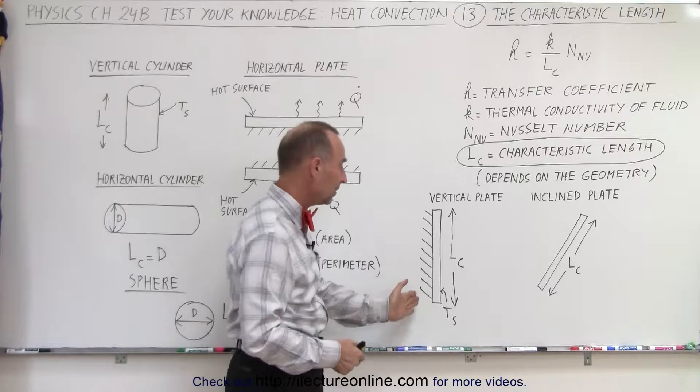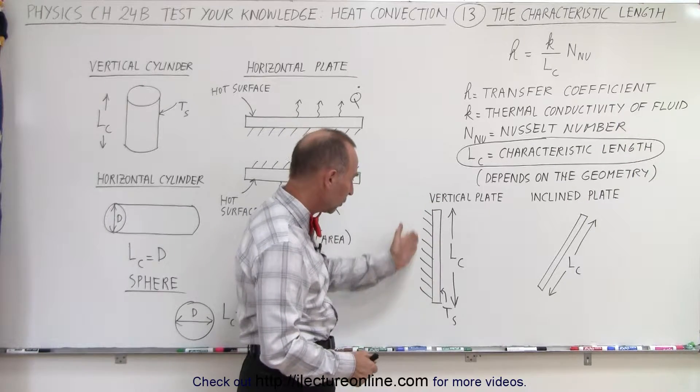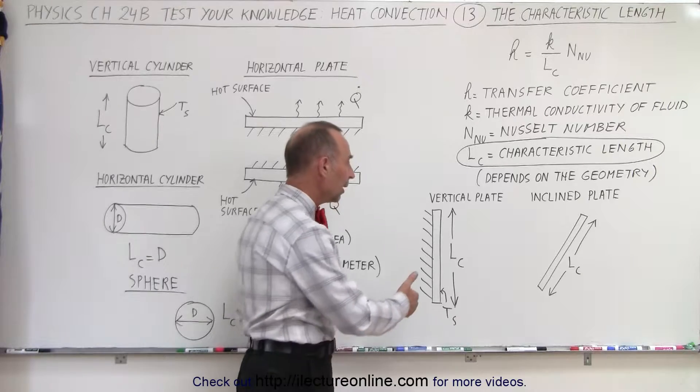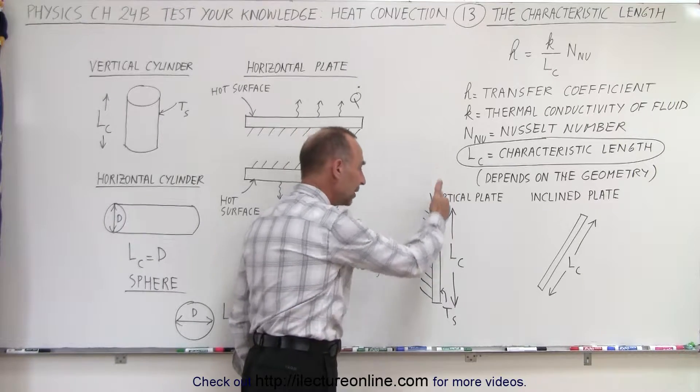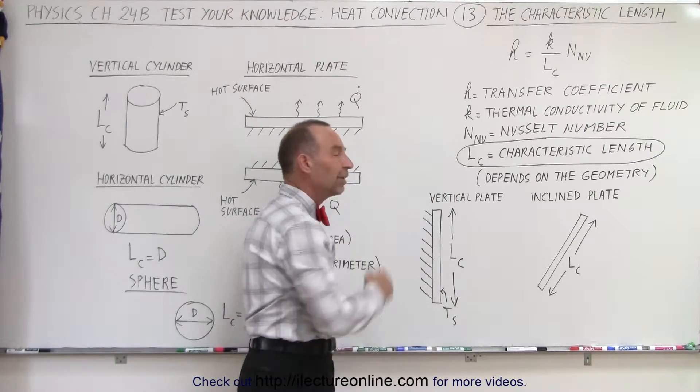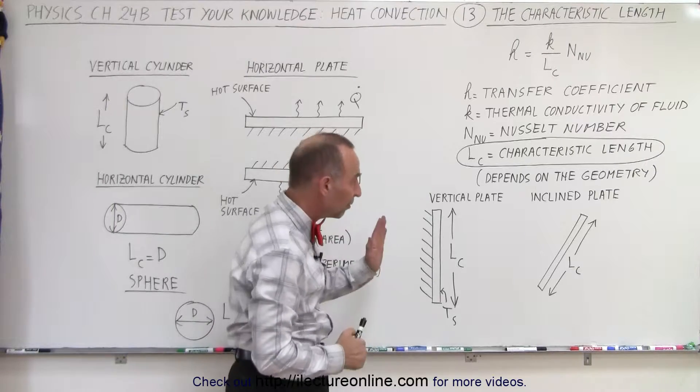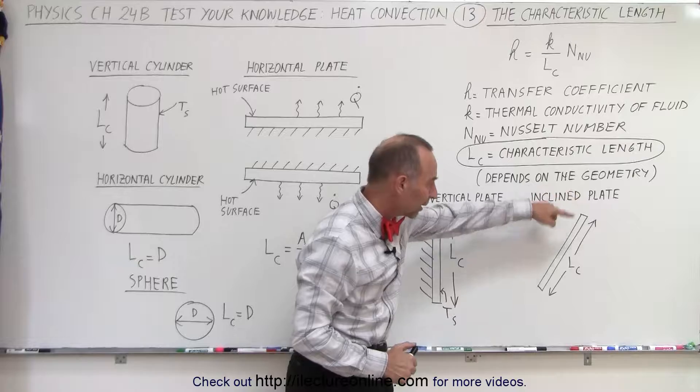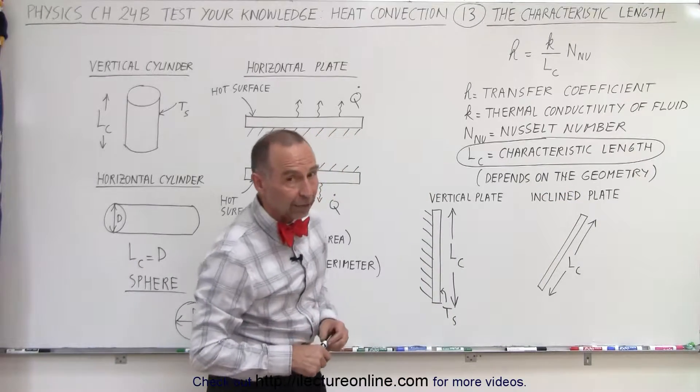Now, for example, when we have a vertical plate and we have one hot side and a cold side, notice that this is the temperature on the surface right here, then we take the characteristic length to simply the height of that vertical plate. Even if the plate is inclined to some extent, we still take the length of that plate in that direction as being the characteristic length.